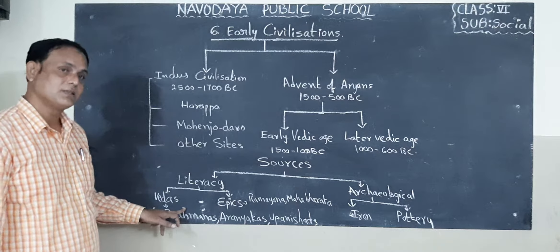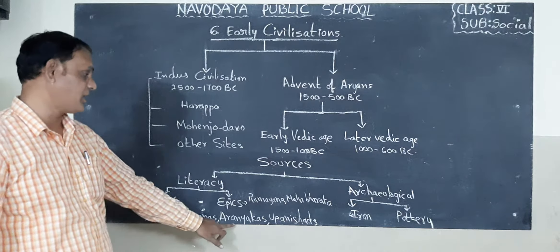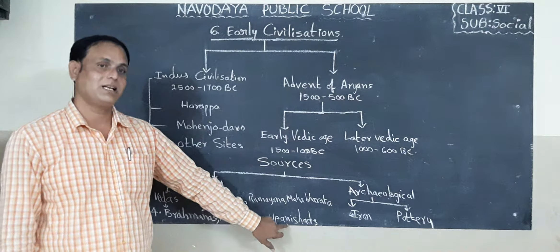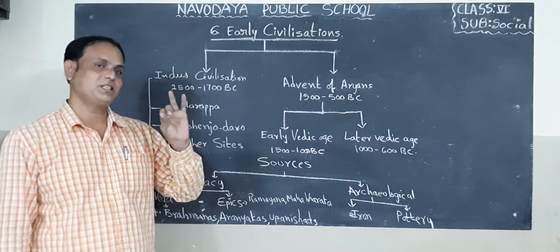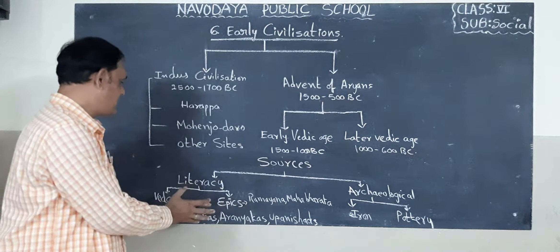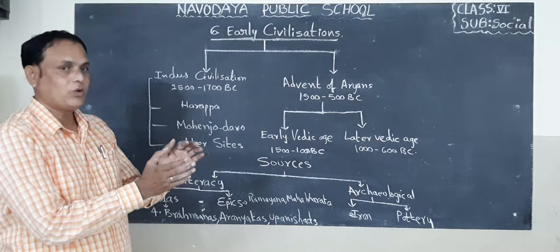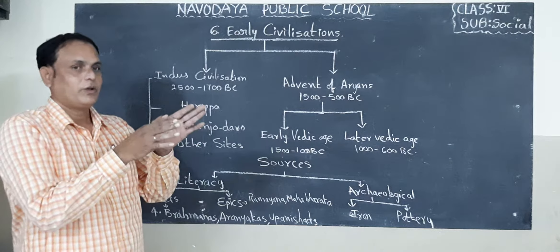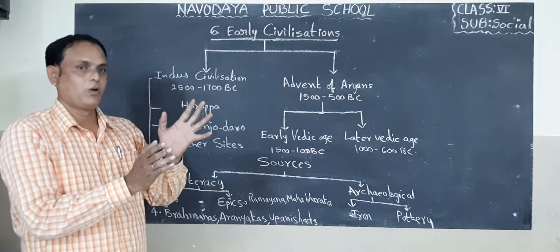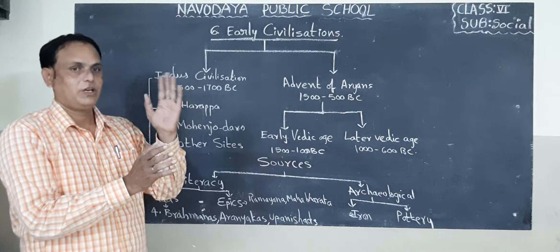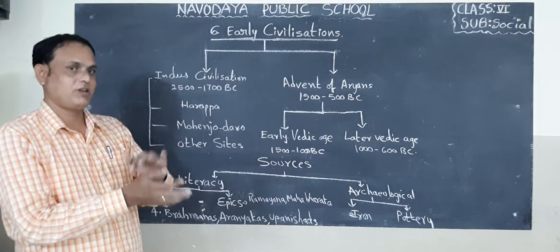Apart from the four Vedas, we have Brahmanas, Aranyakas, and Upanishads. These are the literary evidence. If you go through this literature, we can find about the people of the Indus Valley Civilization, Vedic Period, and Later Vedic Period.